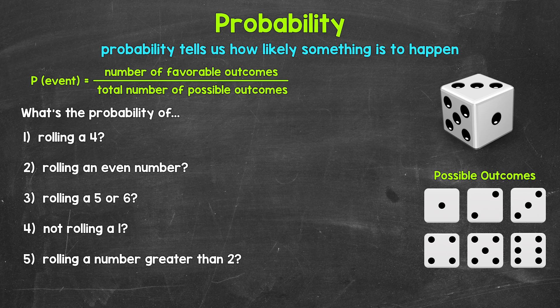So if we roll the die once, what's the probability we roll a four — so the four is facing up? Let's write the probability as a fraction, decimal, and percent. Let's start with the favorable outcomes — how many ways can this event happen? How many sides have a four? You'll notice we have all of the possible outcomes right here; those are all of the sides of a six-sided die laid out. One side has a four, so we have one favorable outcome.